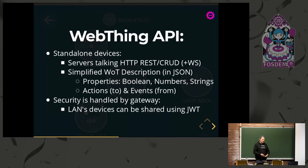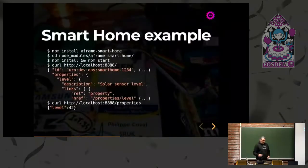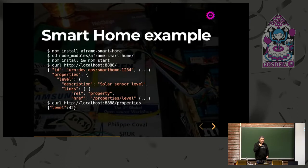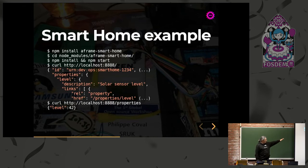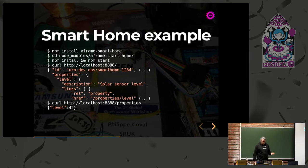Security is handled by the gateway. If you want to share access externally, the gateway provides a REST API with tokens, so you don't have direct access to the device — you need to authenticate. I made a very minimalist example I call a smart home, which has only one thing inside: a solar panel simulator on top. You can try it — it's open source. The description has an ID to identify the thing, properties as I mentioned, and a link for each property. You can get or set values using GET or POST requests. It's straightforward.